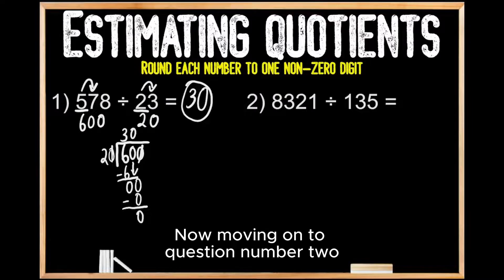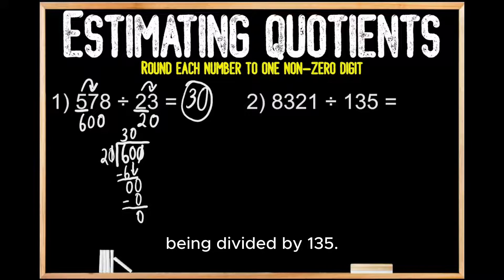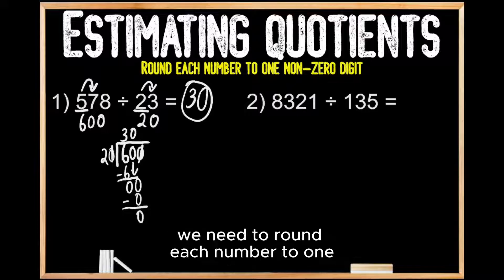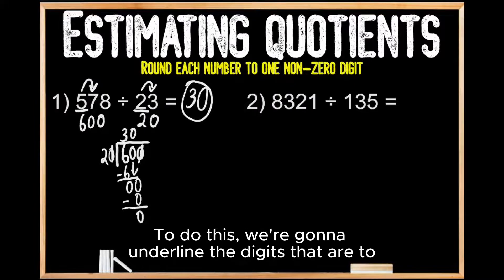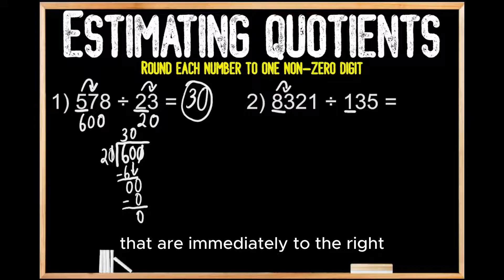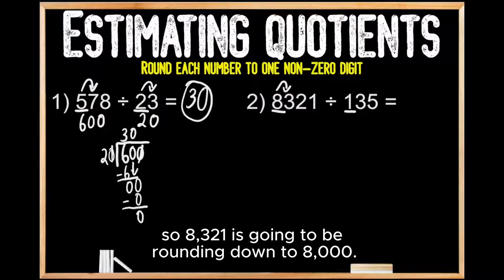Now moving on to question number 2, where this time we're being asked to estimate the quotient of 8,321 being divided by 135. In order to estimate the quotient here, we need to round each number to one non-zero digit. We're going to underline the digits that are to the far left of both numbers, and then look to the digits immediately to the right to see if we're rounding up or down. Since this digit happens to be a 3, we're going to be rounding down, so 8,321 is going to round down to 8,000.